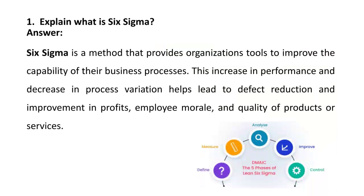The very first question: what is Six Sigma? Six Sigma is a method or tool to improve the capability of business processes. It increases performance and decreases process variations, which ultimately decreases defects or improves profit, employee morale, and the quality of the product or service.